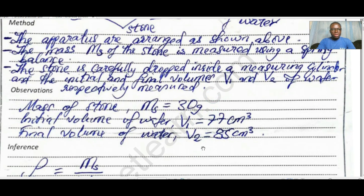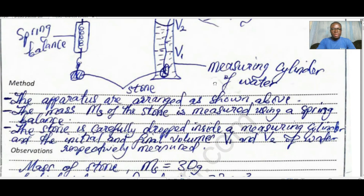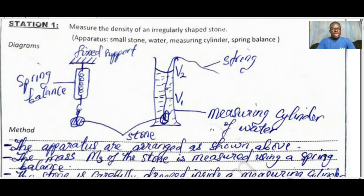We have been asked to calculate the density of an irregular object. Density is mass per unit volume of a substance, meaning we will be calculating both mass and volume. To get your mass, you need a scale balance or you tie the object on a rope or string and measure using a spring balance.